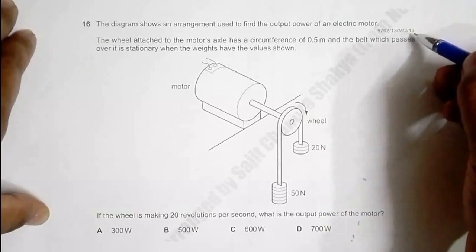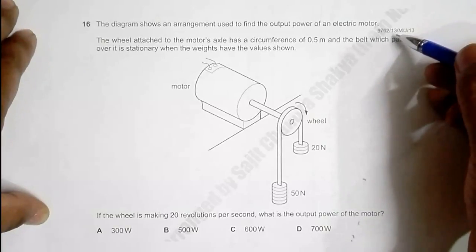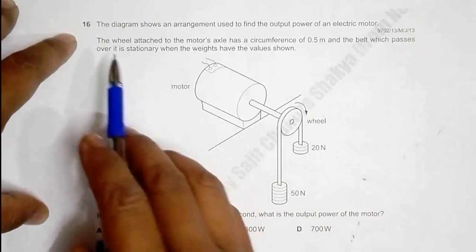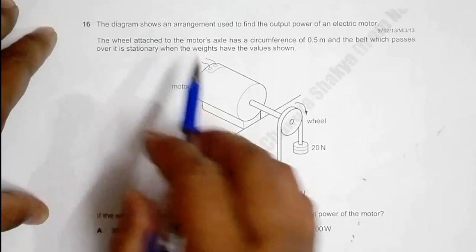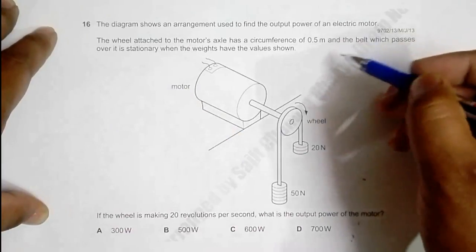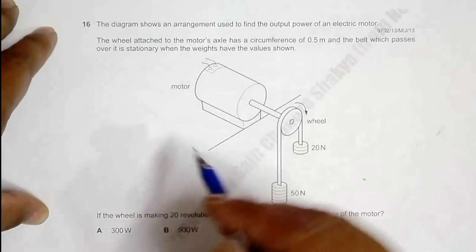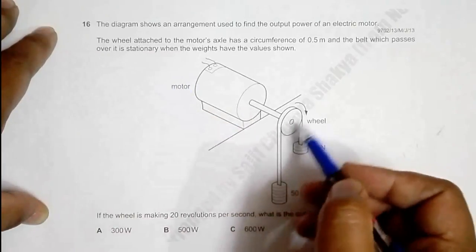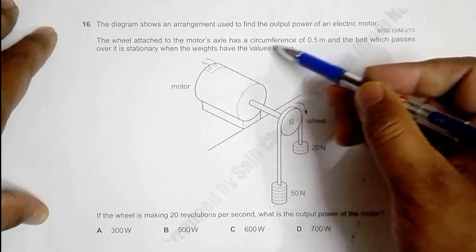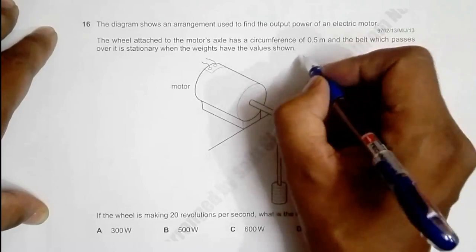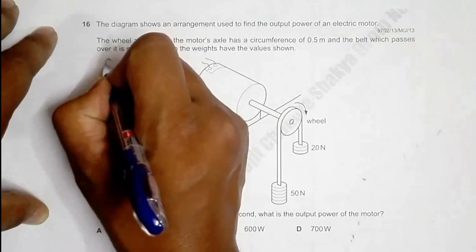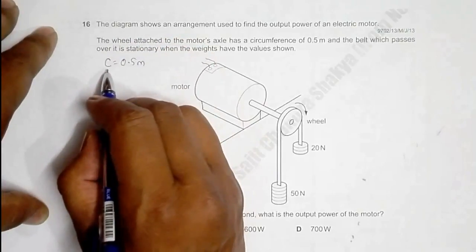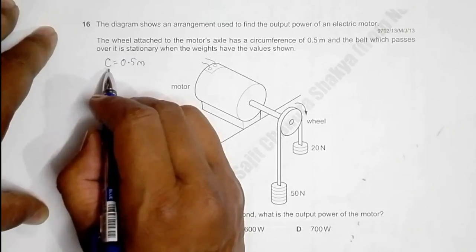This question belongs to 2013 May-June Paper 1-3, question number 16. The diagram shows an arrangement used to find the output power of an electric motor. This is the motor, the wheel attached to the motor's axle, and the wheel has a circumference of 0.5 meters. So C = 0.5m, meaning in one rotation it will cross a linear distance of 0.5 meters.